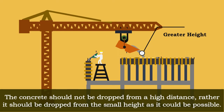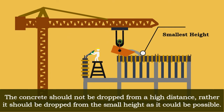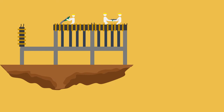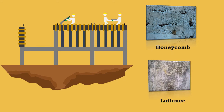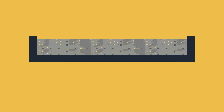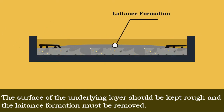The concrete should not be dropped from a high distance; rather it should be dropped from as small a height as possible. The concrete should be placed at one point and made to flow sideways such that there is no honeycomb and laitance formation. This can be achieved by placing the concrete layer by layer.